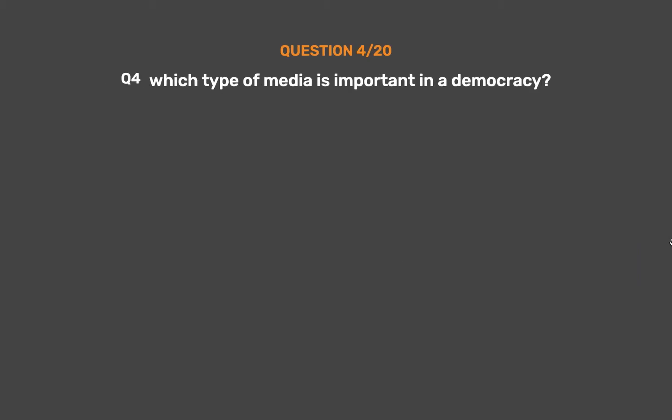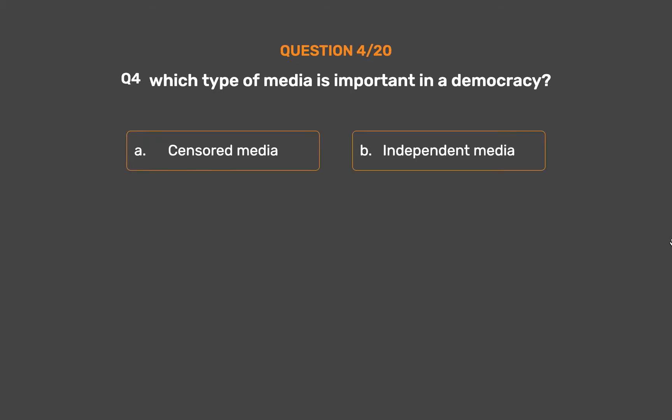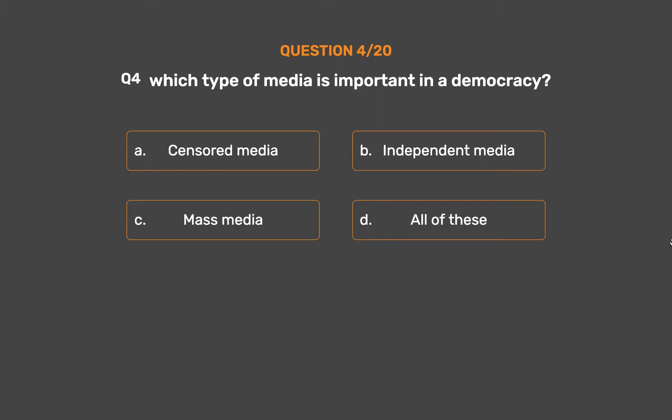Question number 4. Which type of media is important in a democracy? Option A: Censored media. Option B: Independent media. Option C: Mass media. Option D: All of these.